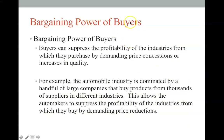The fifth force is the bargaining power of buyers, which is similar to supplier power except it is the buyers that have the power. In the airline industry, buyers likely have significant power because they have access to many price comparison sites and can choose between different airlines and websites to find cheaper prices. Hotels are the same — there are many comparison websites, and if a buyer doesn't like the price they can easily switch to another. Buyers can suppress industry profitability by demanding price concessions or increases in quality.